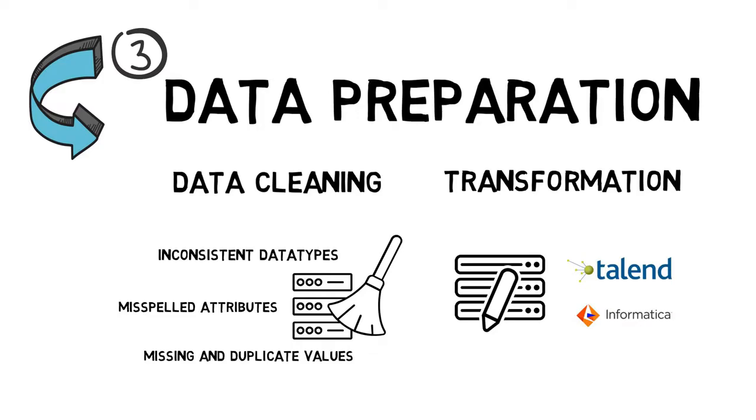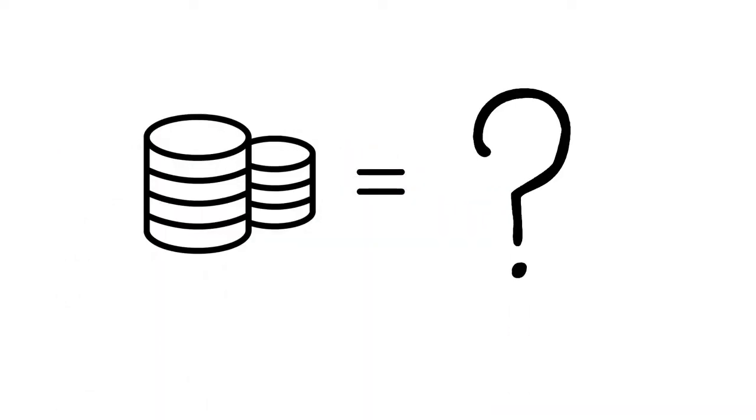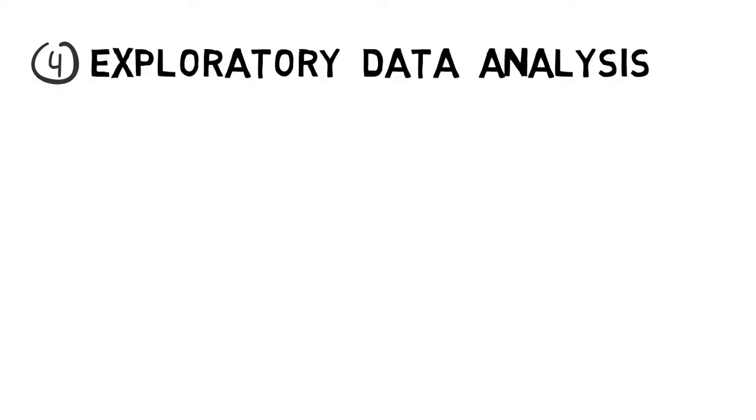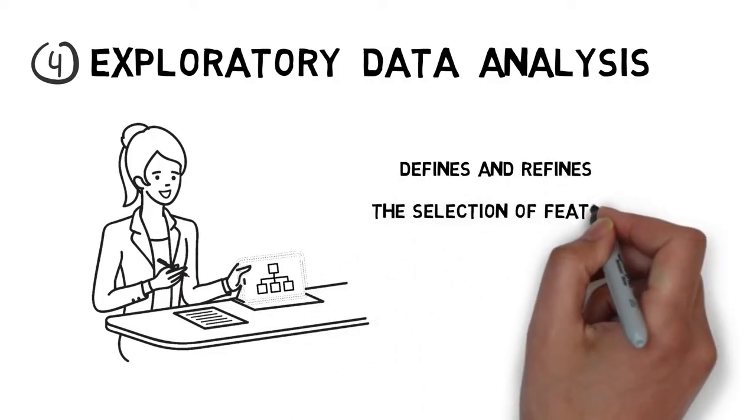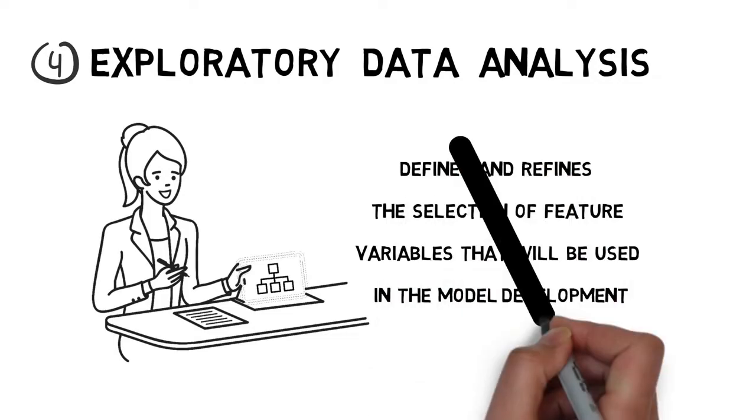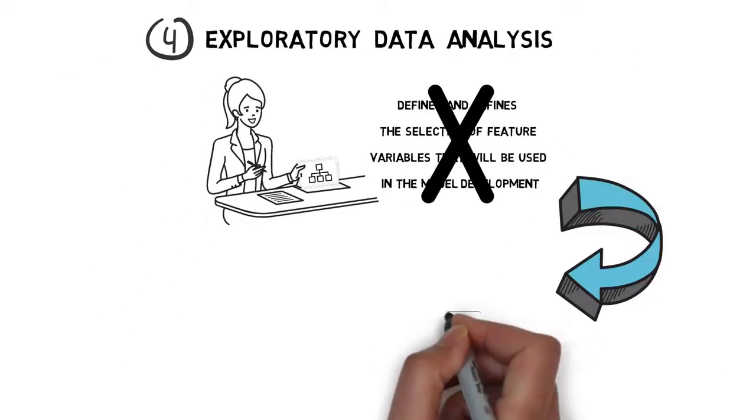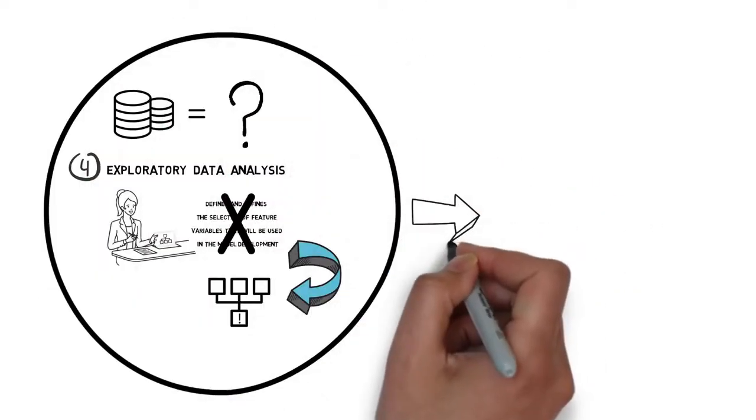Understanding what you actually can do with your data is very crucial. For that, Emma does exploratory data analysis. With the help of EDA, she defines and refines the selection of feature variables that will be used in model development. But what if Emma skips this step? She might end up choosing the wrong variables, which will produce an inaccurate model. Thus, exploratory data analysis becomes the most important step.